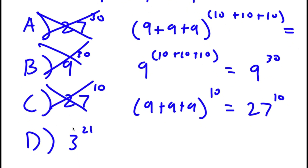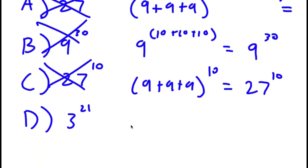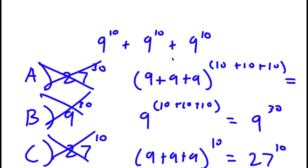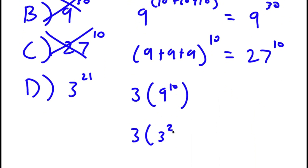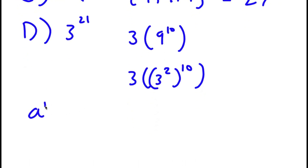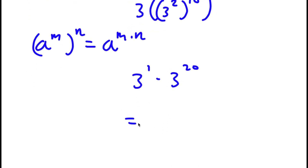Finally, for answer choice D, you write this as 3 times 9 to the power of 10, because 9 to the power of 10 added to itself three times. Now 9 to the power of 10 is the same as 3 to the power of 2 to the power of 10, which equals 3 to the power of 20. So I have 3 to the power of 1 times 3 to the power of 20, which equals 3 to the power of 21.